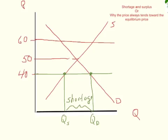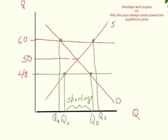At $60, consumers are not really thrilled about this high price, so they're not going to be buying as many shoes — here's another Q sub D. However, producers are really liking this new high price. They say, yes, that's $60, we'll make all the shoes you want — so we call this Q sub S. Now we have a greater quantity supplied than quantity demanded, and what do we call that? A greater quantity supplied than demanded — we're going to call that a surplus.